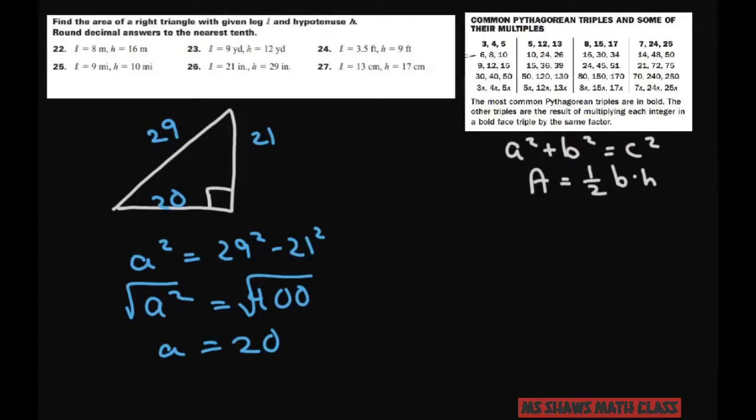So anyway, that's your base. So now we're going to do your area. It's ½ times 20 times 21, which equals 10. I'm just multiplied those two times 21, which equals 210 square inches.